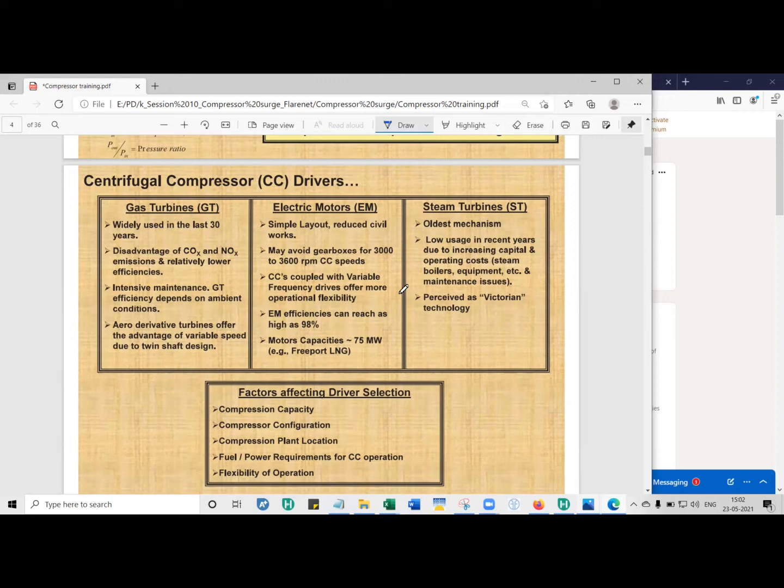When fuel prices rise, the cost of steam per unit also rises. Therefore, your operating costs go up. Steam turbines have their advantages, which is it makes more sense to use them in power plants to generate electricity. But in centrifugal compressors you can use them, but they come at a price.